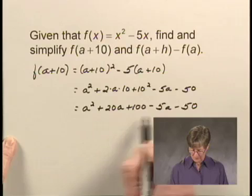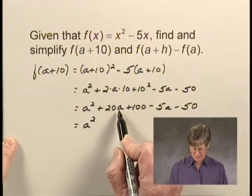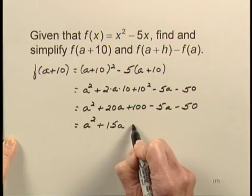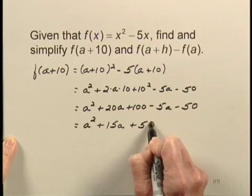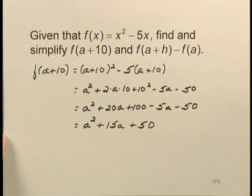There's only the one a squared term, but there are 2a terms, so I can collect those. I'll have a squared, 20a minus 5a is 15a, and then I have 100 minus 50, which is 50. So f of a plus 10 is a squared plus 15a plus 50.